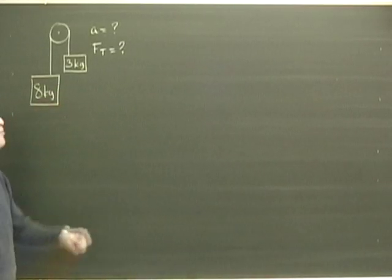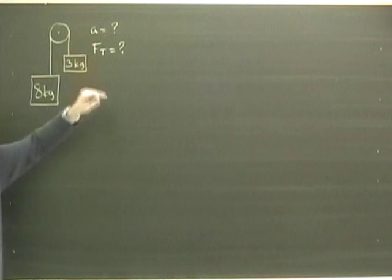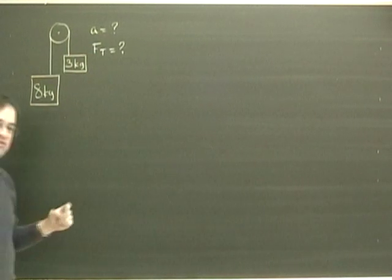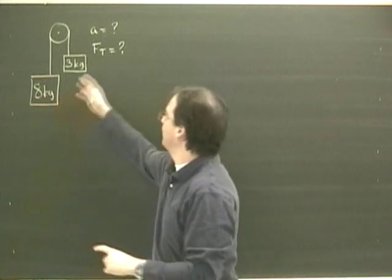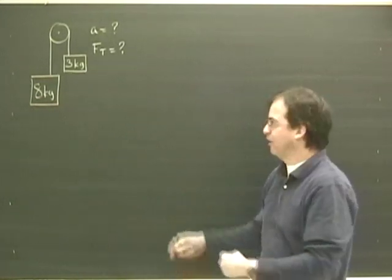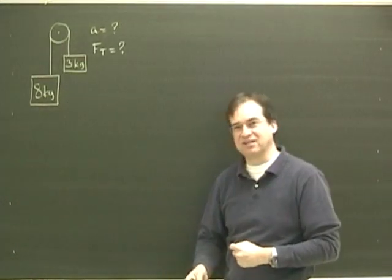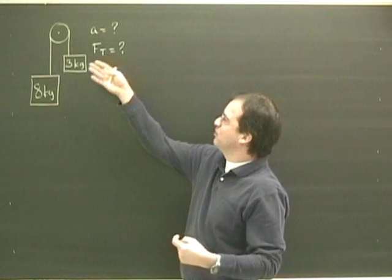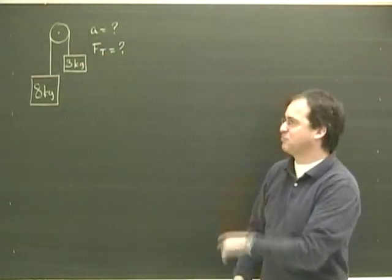What we have here is a pulley problem and we want to find out what the acceleration of the system is and what the tension in the rope is. In order to do that, we have to draw a free body diagram of each. We've got to solve for what we can of the free body diagram and then put the two equations we get together and solve for the acceleration. Once we have that, then we can plug in some numbers and solve for the tension.